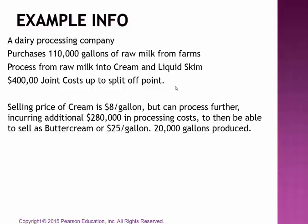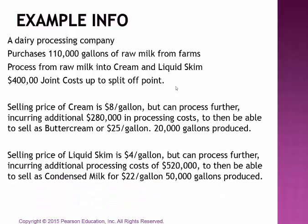Recall that those $400,000 in joint costs are sunk — there's nothing we can do to change the fact that they've been spent, and they're the same under Case A or Case B, so we get to ignore them as they're not relevant. However, the additional processing costs past the split-off point will come into play. An extra $280,000 would need to be spent to process cream into buttercream, and an extra $520,000 would be needed to turn liquid skim into condensed milk. Under Plan A, no additional processing costs would be incurred, but under Plan B, additional costs apply.